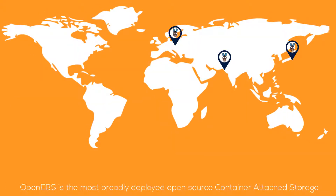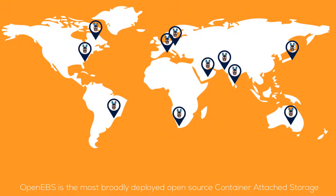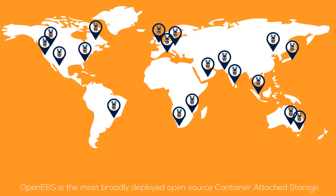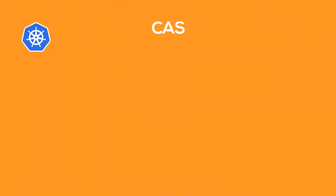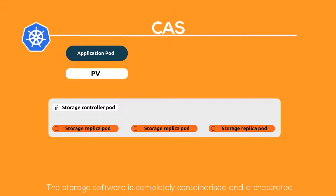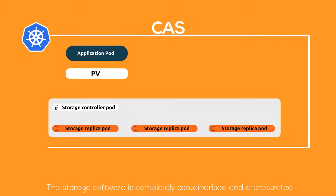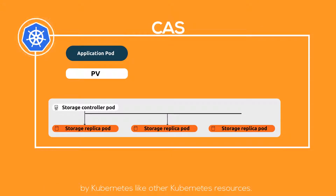OpenEBS is the most broadly deployed open source container attached storage, or CAS storage software. The storage software is completely containerized and orchestrated by Kubernetes,